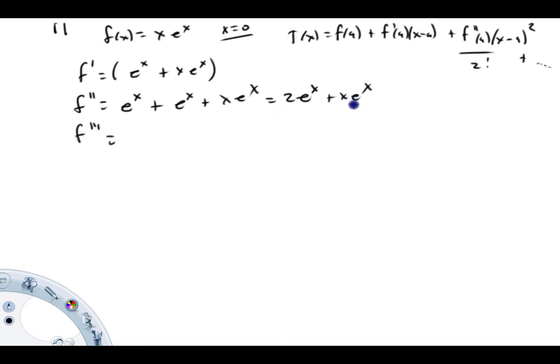Third derivative, I'll differentiate this, that's going to be 2e to the x plus, this has to be product rule, derivative of the first times the second plus the derivative of the second times the first, and that's going to be 3e to the x plus xe to the x. And obviously the next one, the fourth one here, is going to be 4e to the x plus xe to the x, etc.